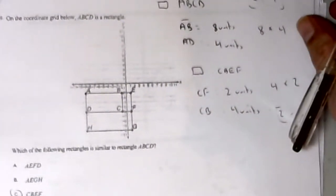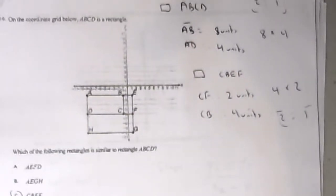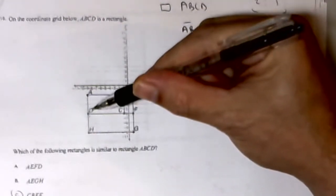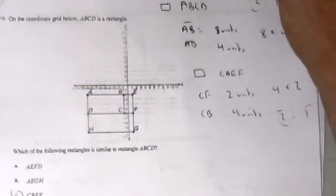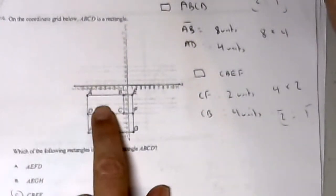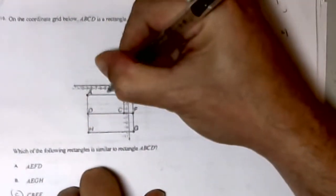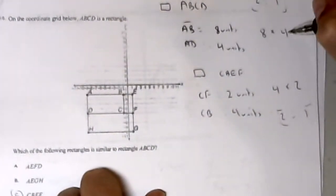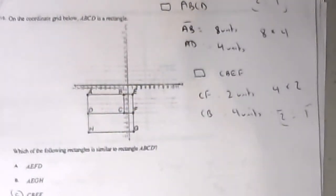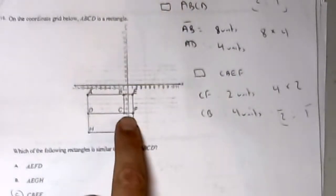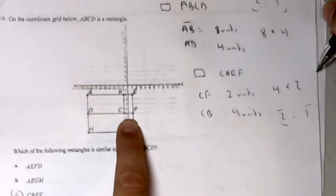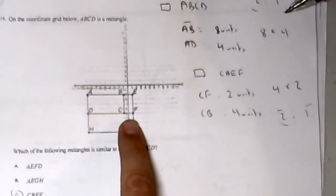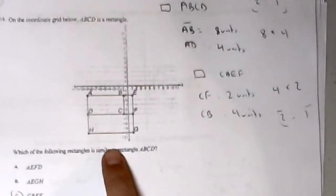On the coordinate grid, ABCD is a rectangle. Which of the following rectangles is similar to ABCD? AB is 8 units and AD is 4 units, so this is an 8 by 4 rectangle, which reduces to a ratio of 2 to 1 — the long side is twice the short side. Rectangle CBEF is 4 units by 2 units, which also reduces to 2 to 1. That ratio of sides is the same, and that's what makes a similar rectangle or figure.